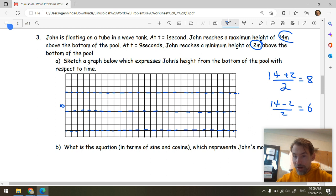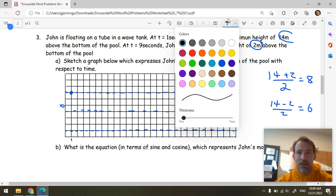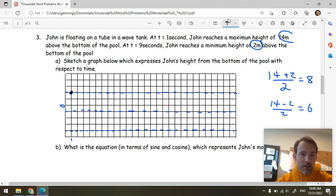All right. Now let's go ahead and plot our points. At time equals 1 second, so this is 1, and he's at the maximum. So he's up there. And then at 9 seconds, so 2, 3, 4, 5, 6, 7, 8, 9, he's down there.